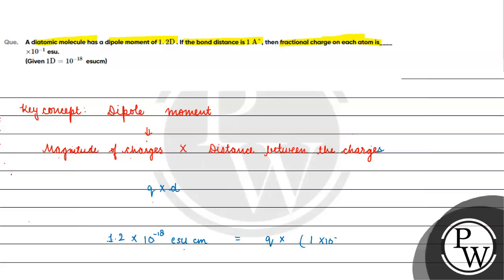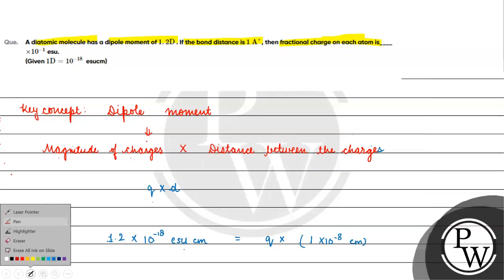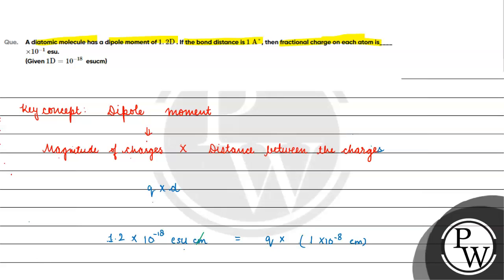To find q, we divide dipole moment by distance: q = 1.2 × 10⁻¹⁸ divided by 10⁻⁸ cm, which gives q = 1.2 × 10⁻¹⁰ esu.